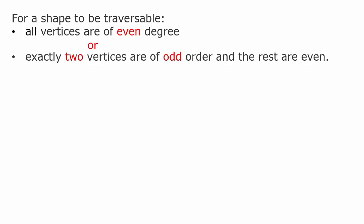Here are the important definitions that we need to decide whether or not a shape will be traversable. Firstly, if all the vertices are even degree, then the shape is traversable. Or if we have exactly two vertices that are odd degree and the rest are even degree, then we can also say the shape is traversable.